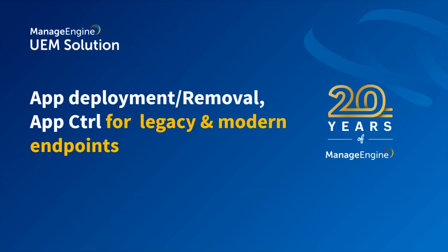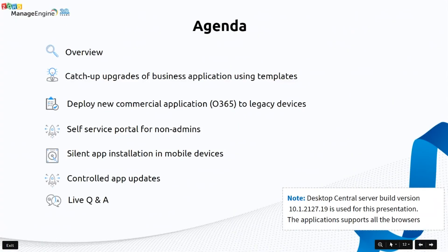Today is about application control, application deployment, and removal — for both legacy and modern endpoints. Looking at the agenda: we'll give an overview of Desktop Central, show how to get upgrades for business applications using templates, deploy commercial applications like Office 365 to legacy devices, deploy apps through a self-service portal, cover silent installation of applications on mobile devices and controlled app updates, and finally take some Q&A.